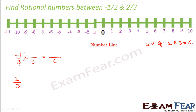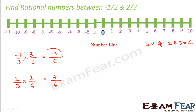For -1/2, multiply numerator and denominator by 3 to get -3/6. For 2/3, multiply by 2 to get 4/6. So our two numbers are now -3/6 and 4/6.